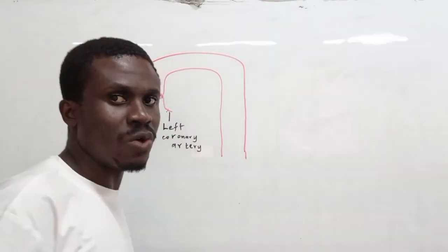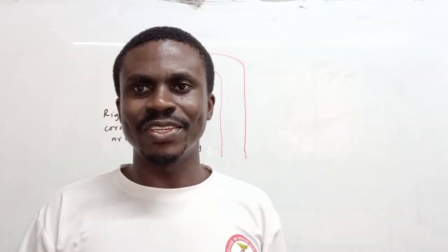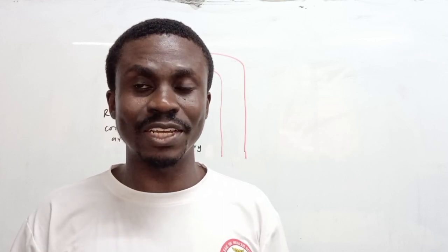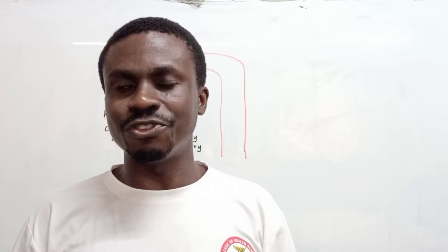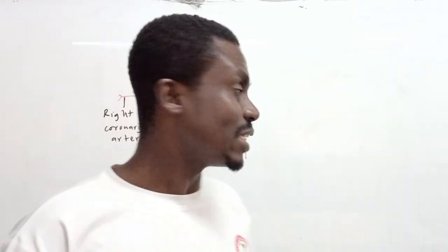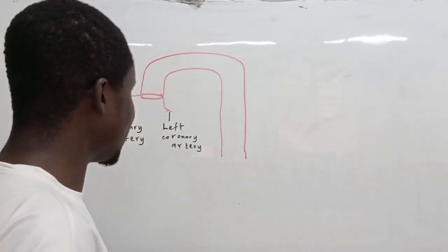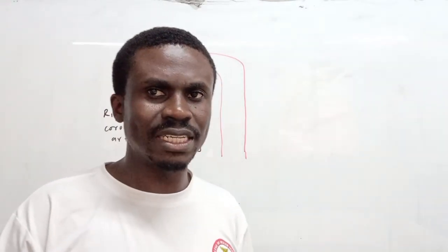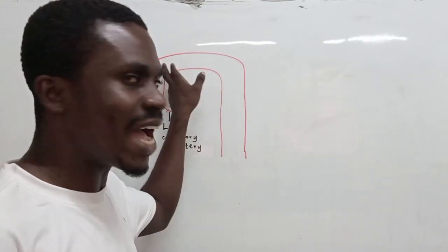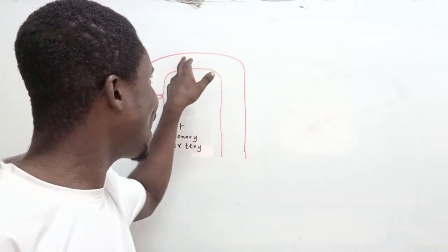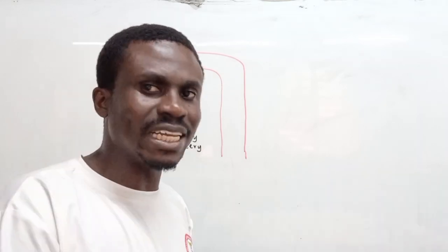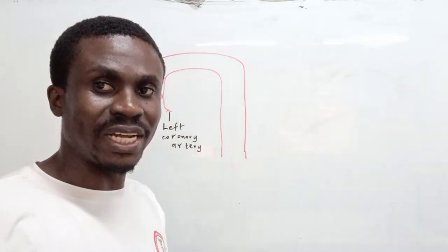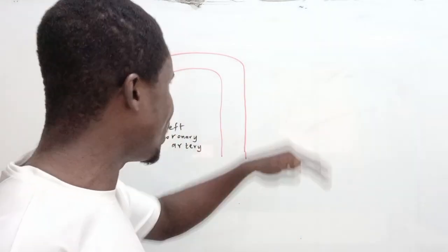Those of you who haven't watched the video on the coronary arteries — covering the branches and the venous drainage — kindly get that video and watch it. Importantly, as far as this video is concerned, I'm interested in the arch of the aorta, which gives us the BCS branches — I prefer to call them BCS branches, from right to left.